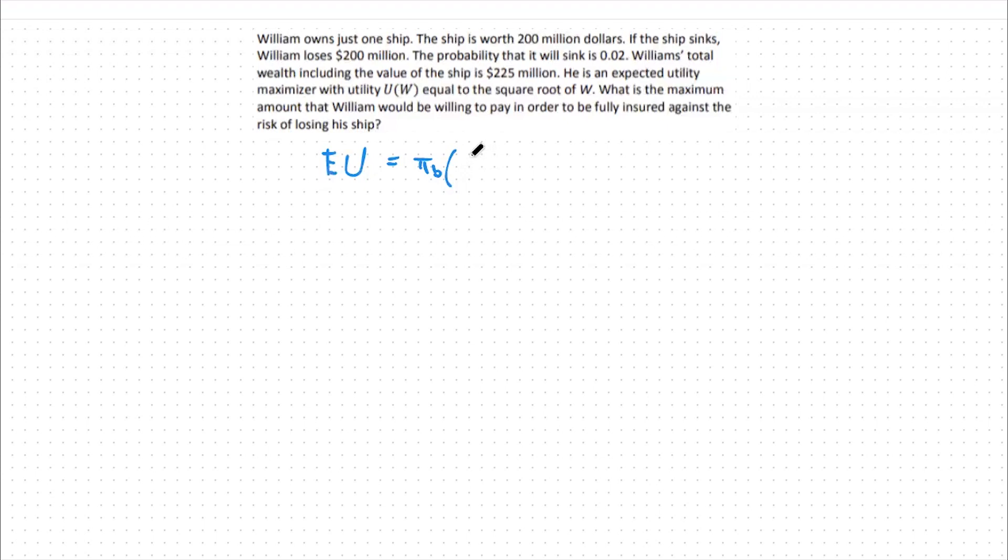I'm going to make a little edit and say instead consumption in the bad state as my variable, just for clarity's sake. So the probability of the bad state occurs times the square root of consumption in the bad state plus the probability in the good state times the square root of consumption in the good state. This is our expected utility function.